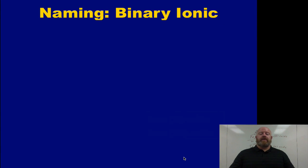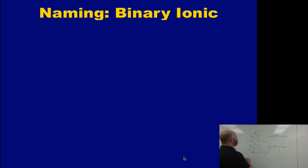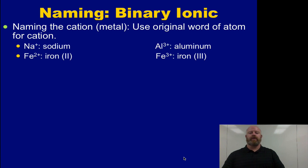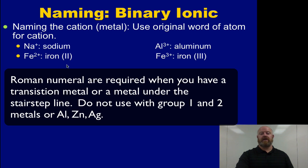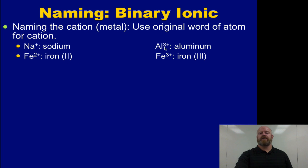As we go through the process of naming these compounds, we call them binary ionic because we are only dealing with two different atoms at any one time. Let's go through the process. First thing, naming the cation or naming the metal. When we name the metal, or we name the cation, you just use the original word of the atom for the cation. So Na+ is sodium. Fe2+ is iron 2. We need the 2 here because iron has more than one possible charge. Sodium, you would not put a 1 behind it. It's not allowed. You cannot do it. It's wrong if you do, because sodium only forms a 1 plus. We only use Roman numerals when there's more than one possibility. Aluminum is a 3 plus. We just call it aluminum. Only possibility. Iron, again, has more than one possibility, so this is a 3 plus. We call it iron 3.